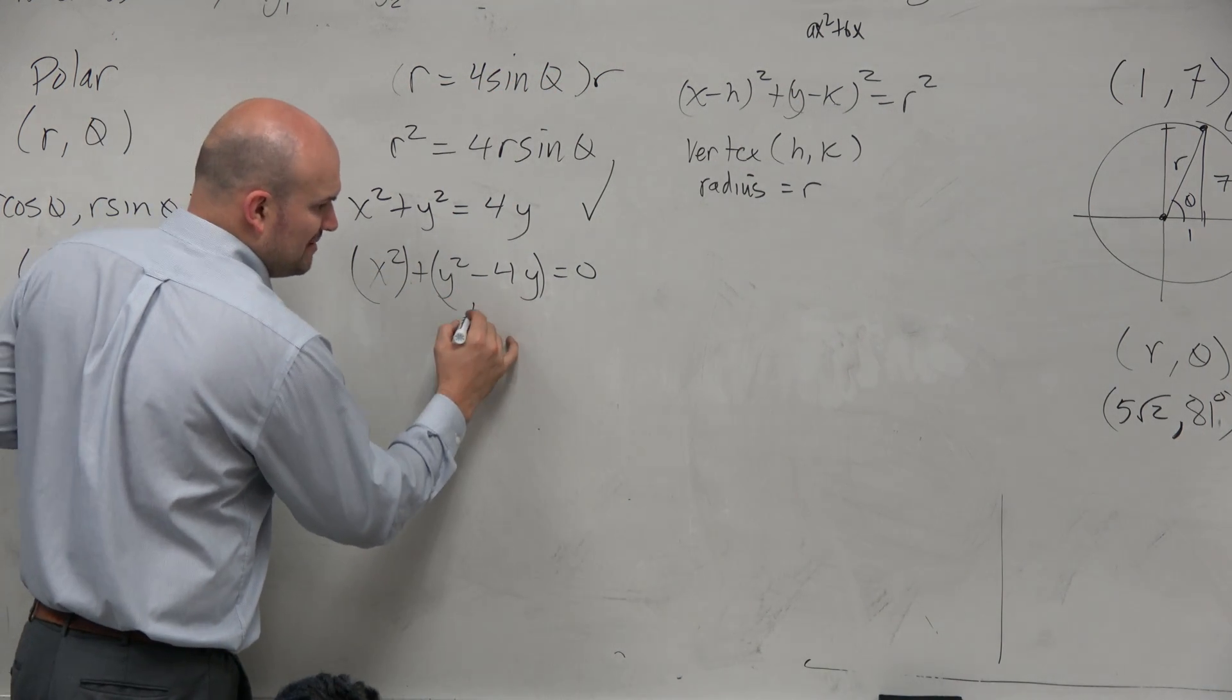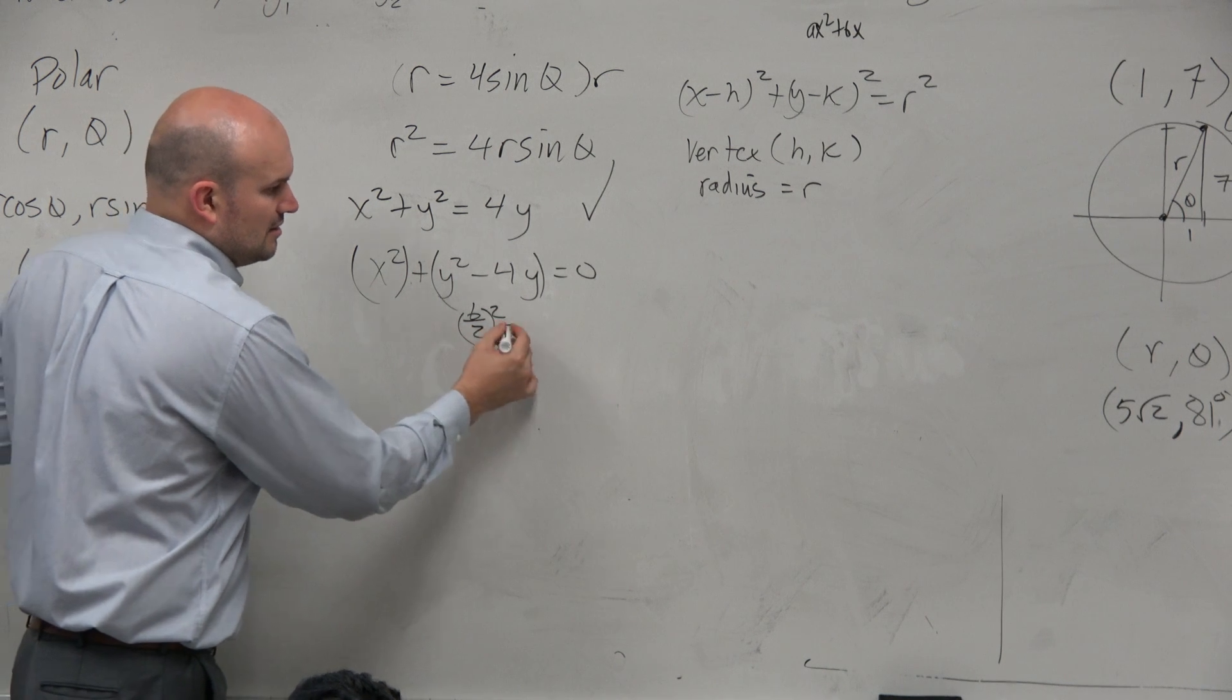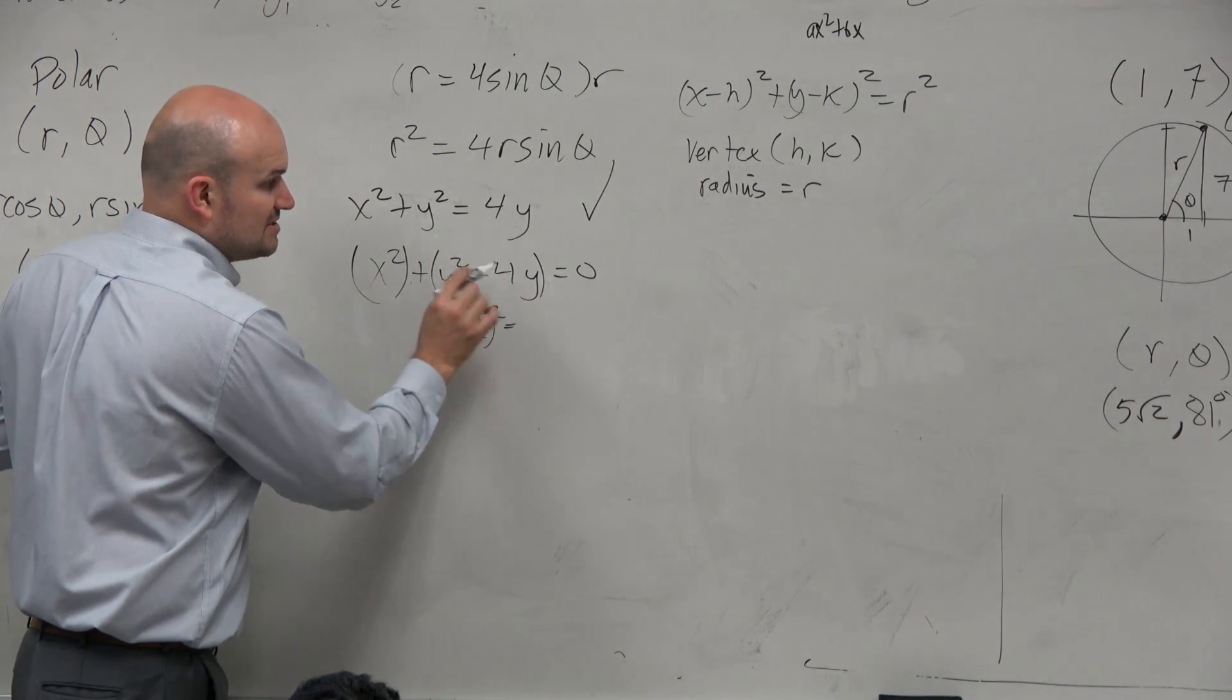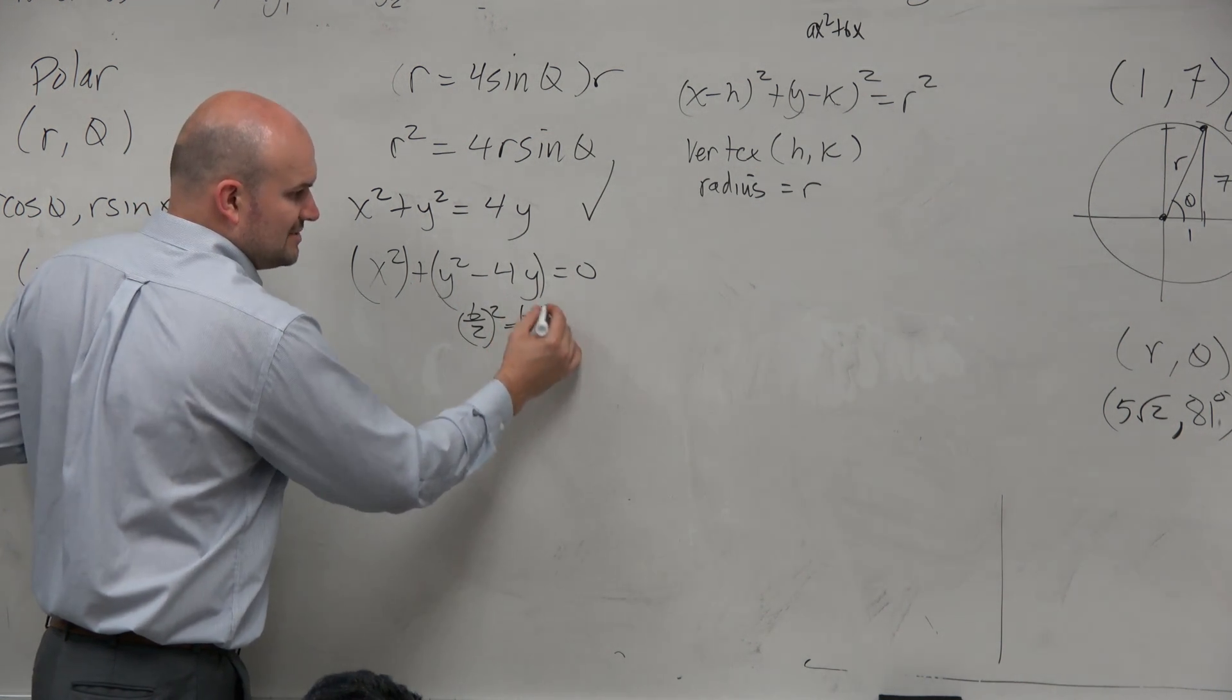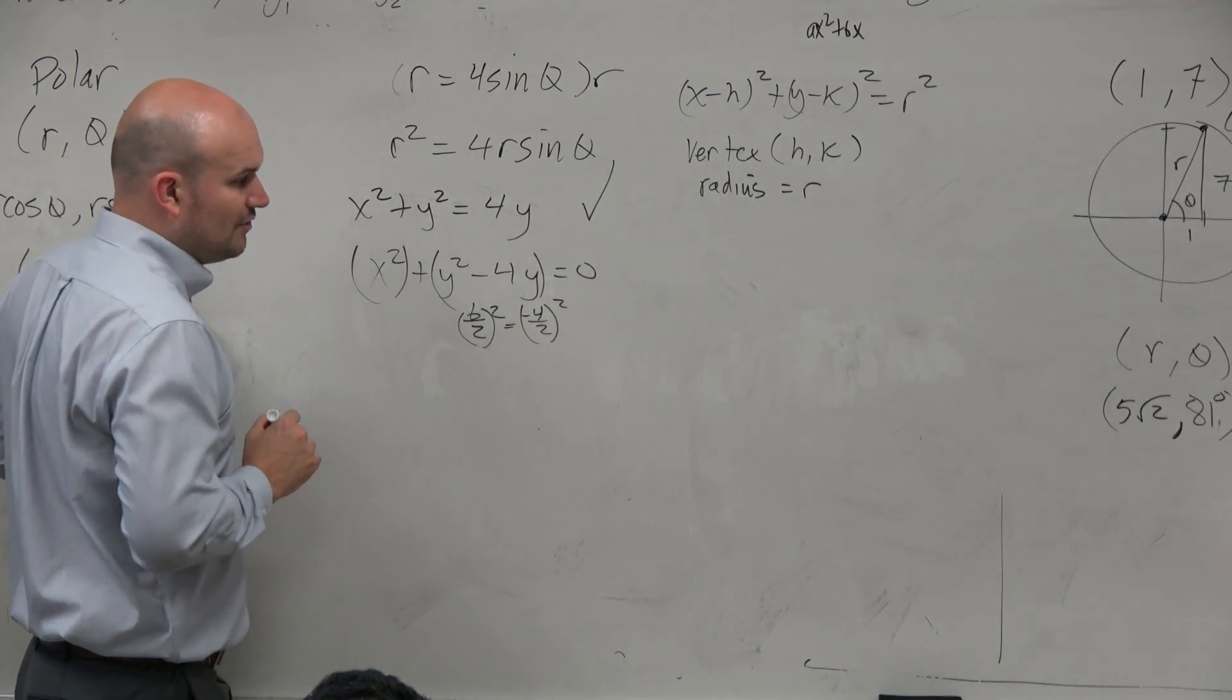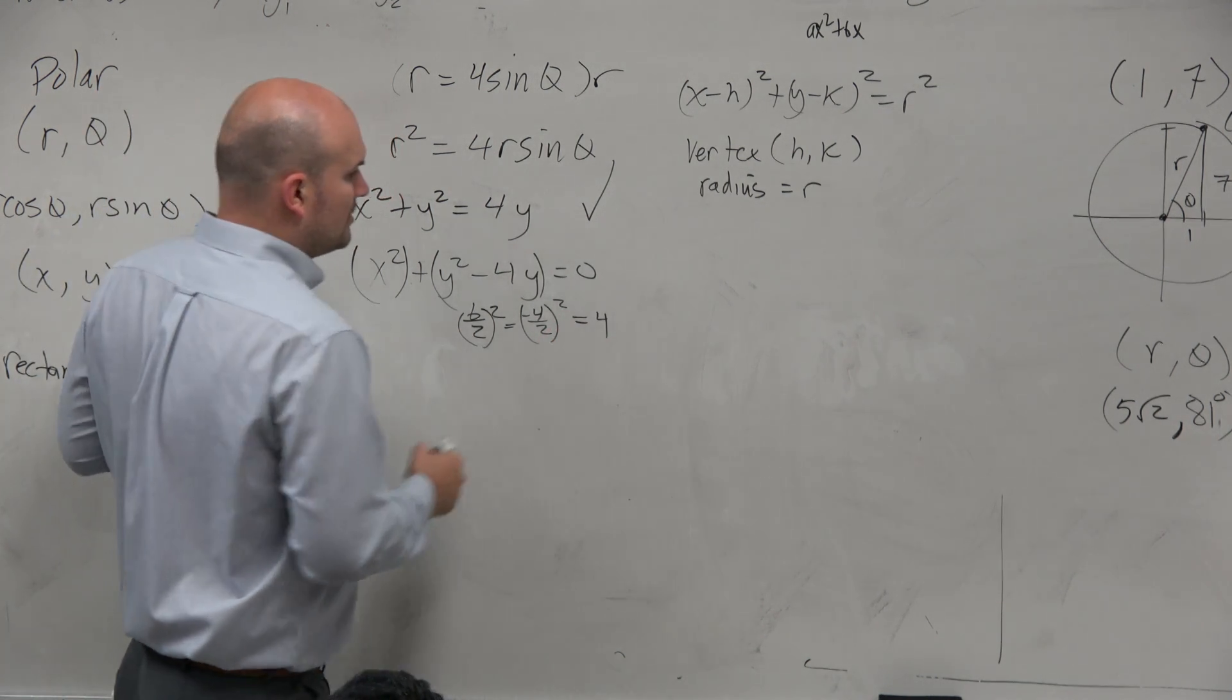What about this one? Remember we take b divided by 2 and square it. What is my b in this case? What's my linear term? What's the coefficient of that? Negative 4. Negative 4 divided by 2, square it. Negative 4 divided by 2 is negative 2. Negative 2 squared is equal to 4.